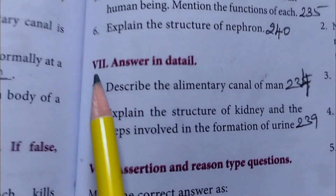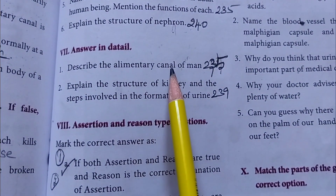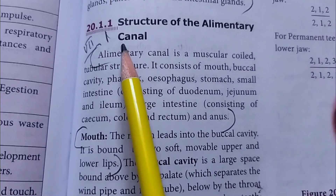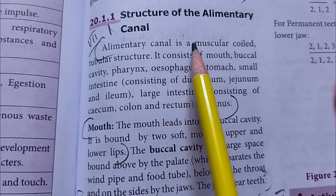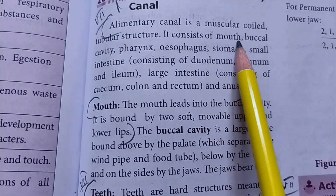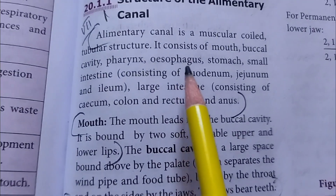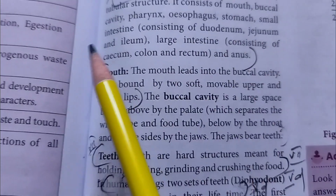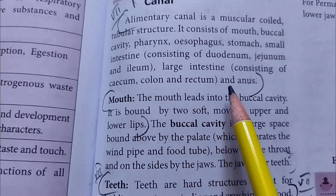7th question: Describe the alimentary canal of man. The alimentary canal is a muscular coiled tubular structure. It consists of mouth, buccal cavity, pharynx, oesophagus, stomach, small intestine (comprising duodenum, jejunum and ileum), and large intestine (consisting of caecum, colon, rectum and anus). The mouth leads into the buccal cavity. It is bound by two soft movable upper and lower lips.